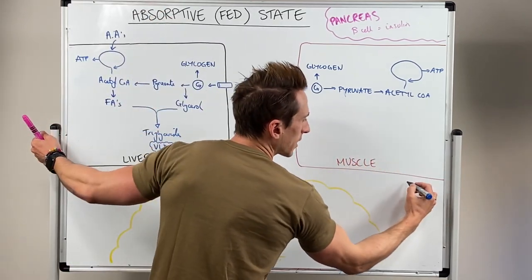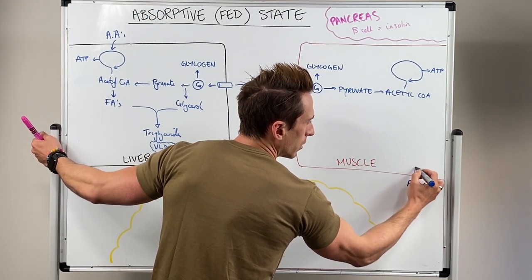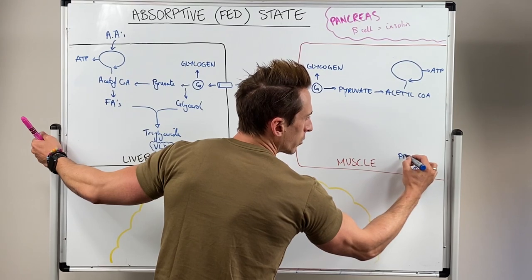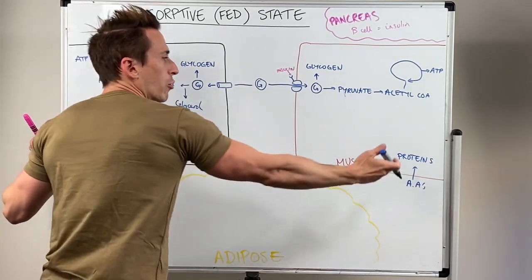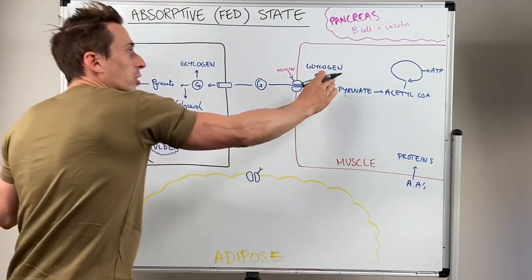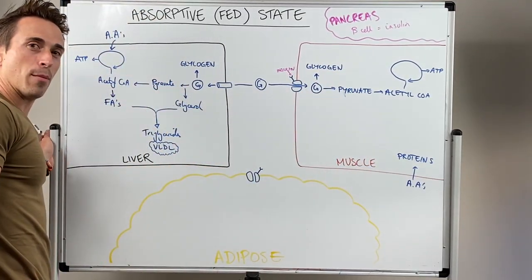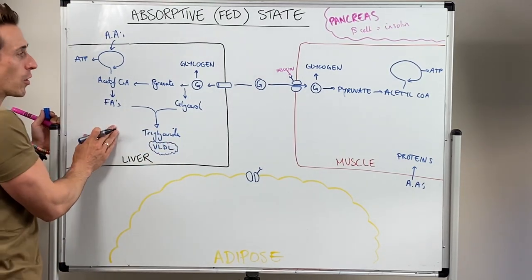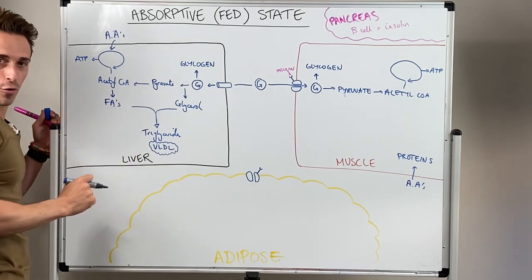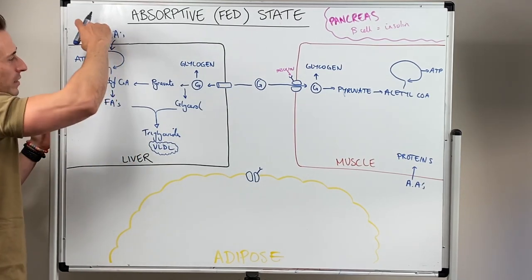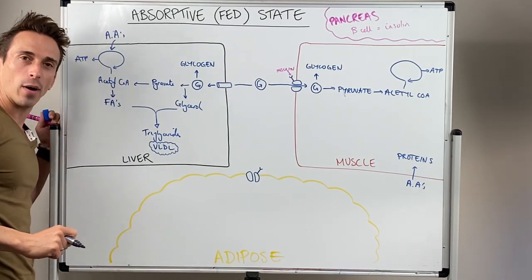The amino acids that are coming in for muscle tissue are predominantly going to be stored as proteins. So you've got protein storage at muscle, glycogen storage at muscle as well. In the liver, you're going to have glucose storage as glycogen, fat storage as well, and amino acids jumping into the acetyl-CoA system.